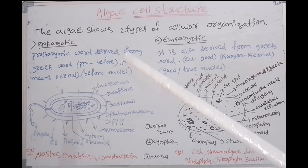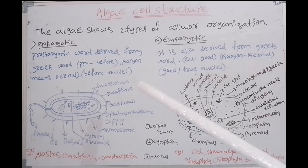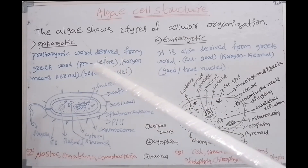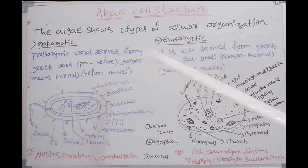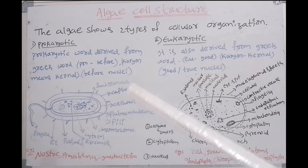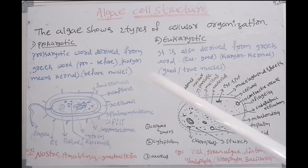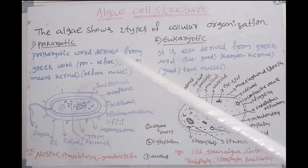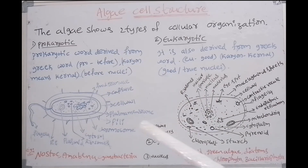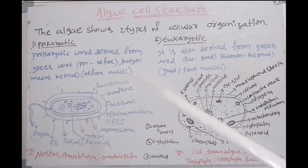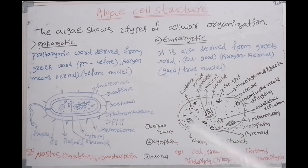The prokaryotic word is derived from a Greek word. It is made up of two words: first one 'pro', second one 'karyan'. Pro means before, karyan means kernel. The total meaning is 'before nuclei'.